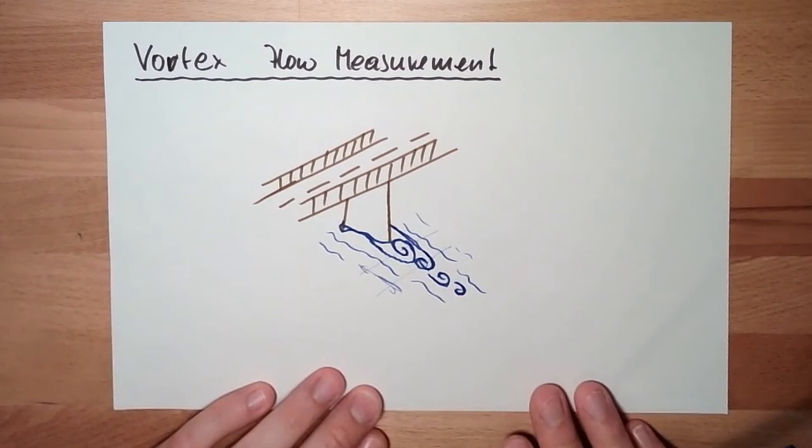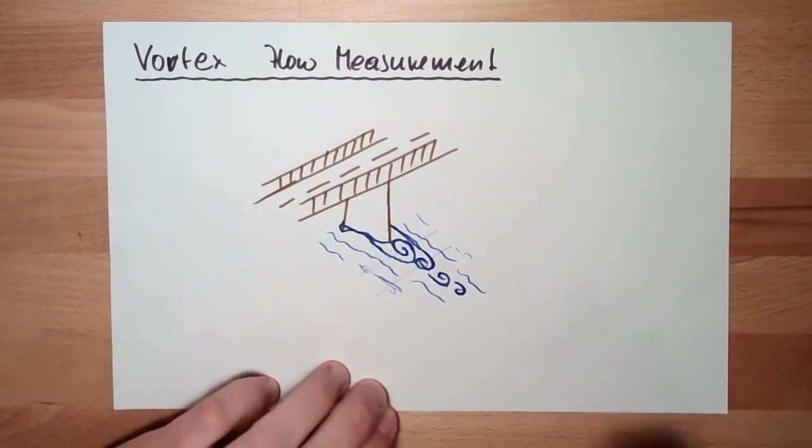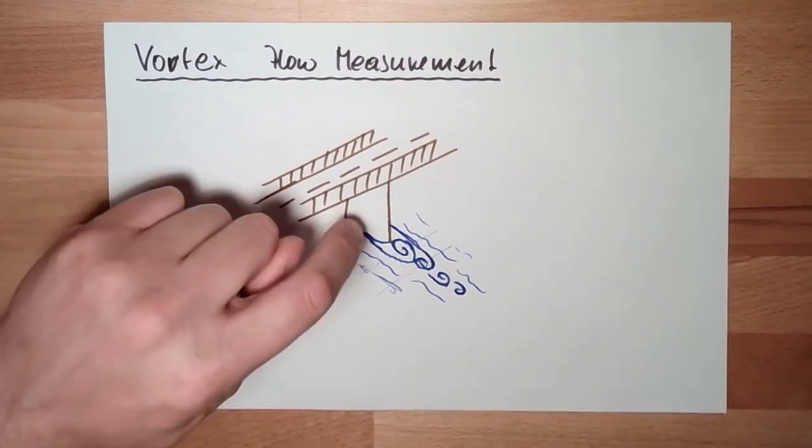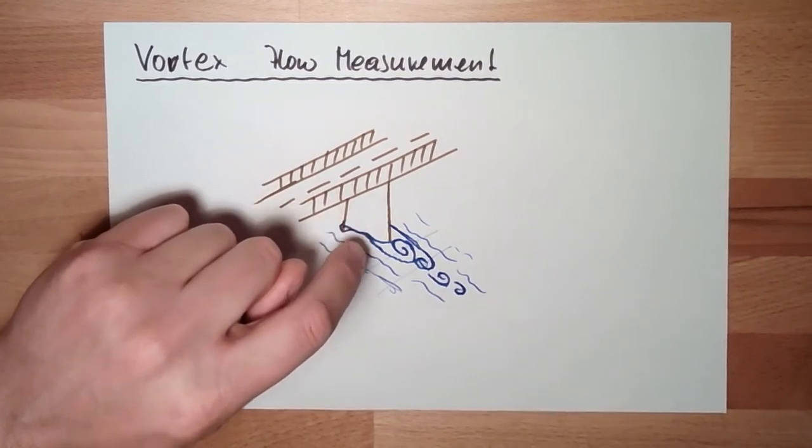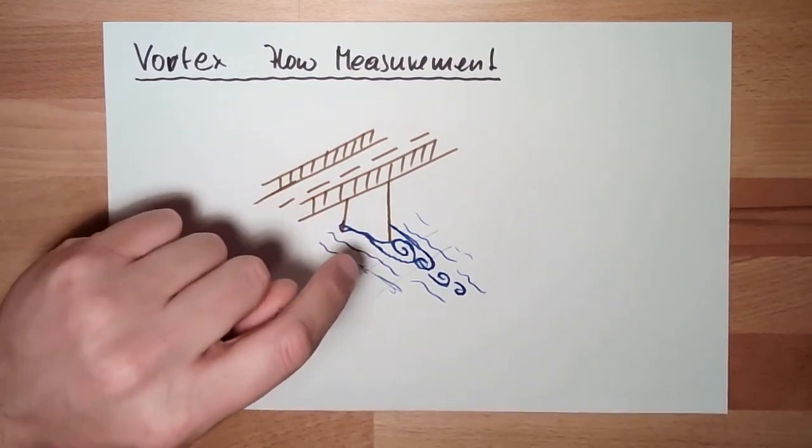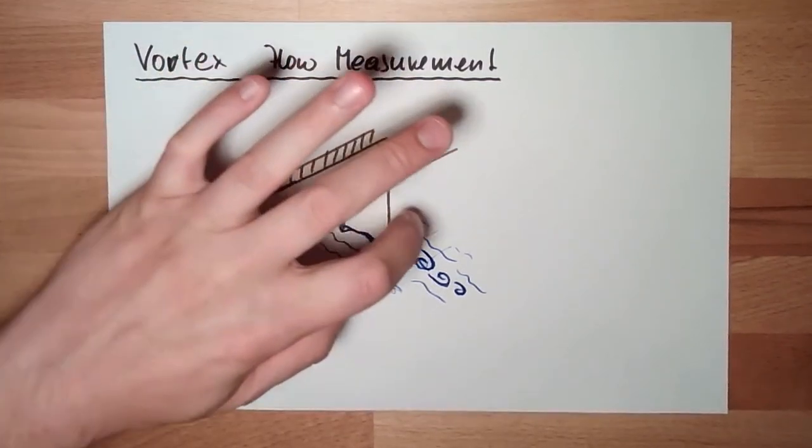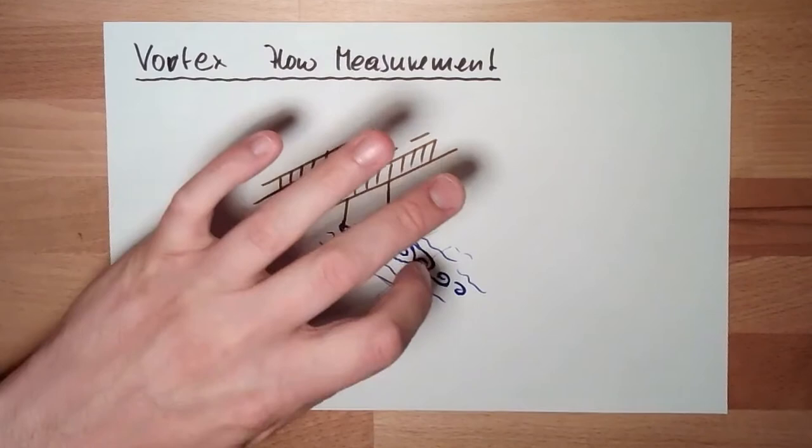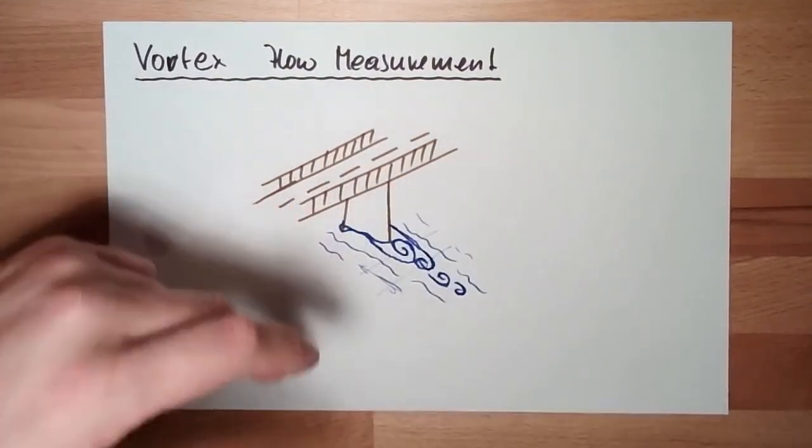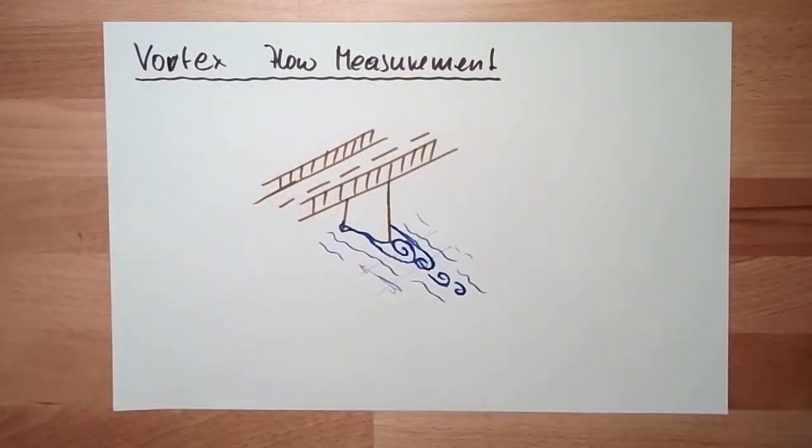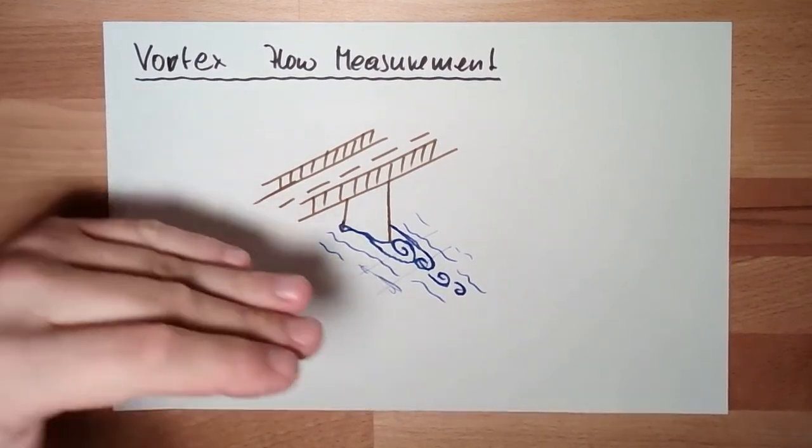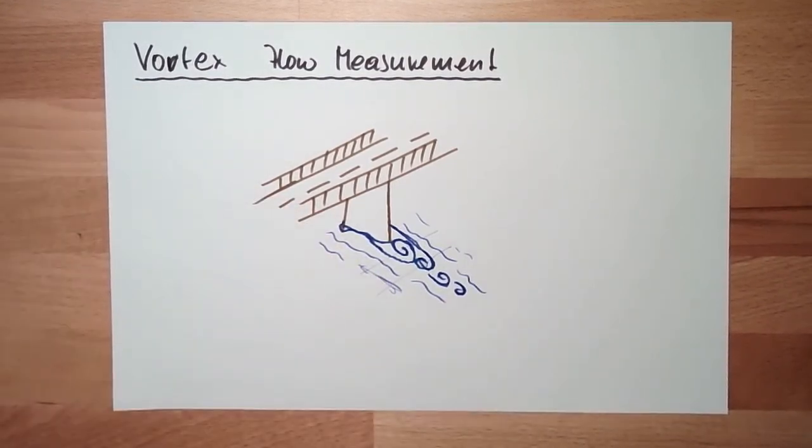Well, vortex flow measurement disadvantage: there is something inside the stream, which means I have a pressure loss. Also the streaming profile must be very accurate, so that I don't already have vortexes when approaching the meter. So I need long pre and post straights.